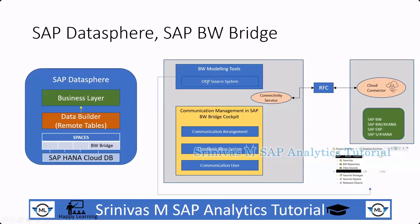The Eclipse tool is used for the modeling part only. The entire administration of BW Bridge happens from the BW Bridge Cockpit. Regarding the cloud connector — before modeling, we need source data, so we need to determine where the source data will come from.